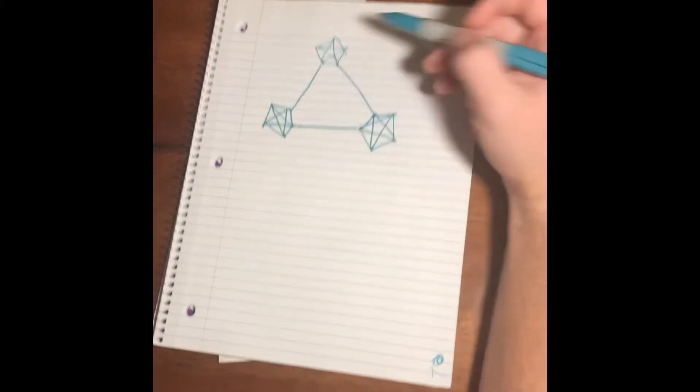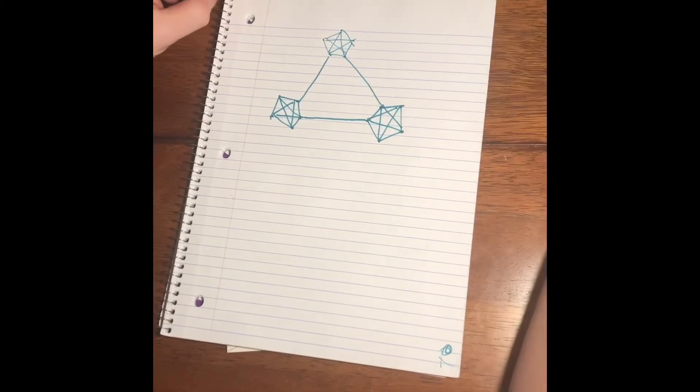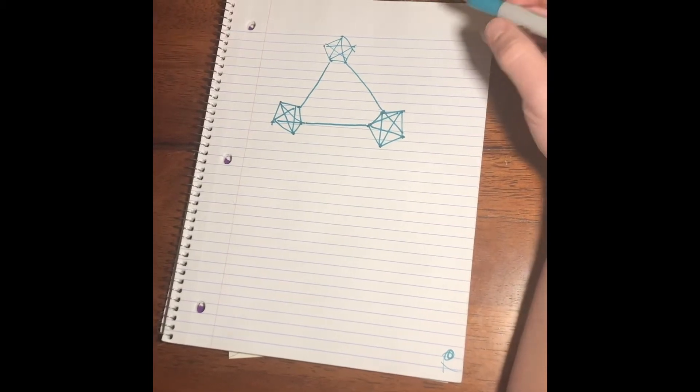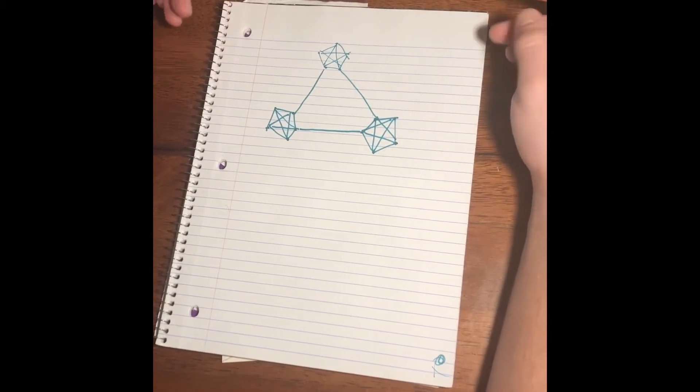Now suppose each of these nodes represented either a task or a variable, and an edge represents dependence between the two.